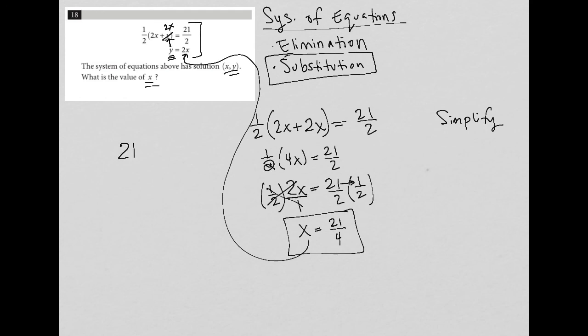So I'm going to bubble in 21 and then my divided by symbol and then 4 and that's going to be the final answer.